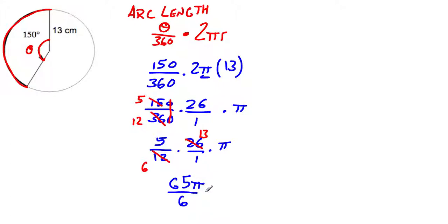Because I'm talking about length and the radius was in centimeters, I now have the arc length, L, to be 65π over 6 centimeters. This is my completed answer.